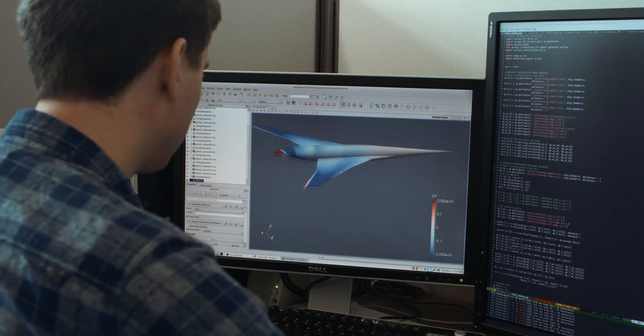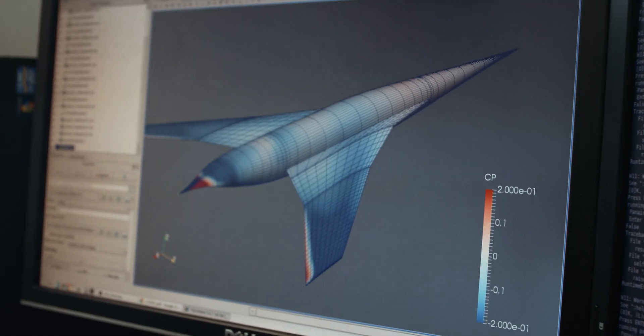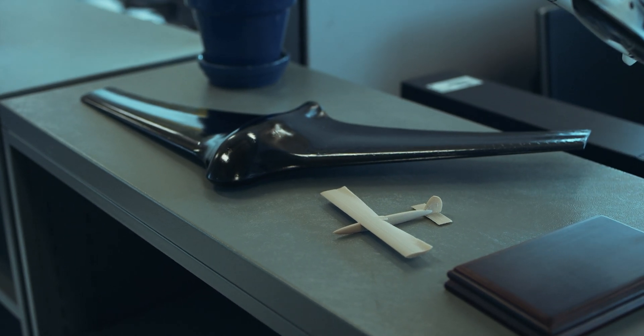In the supersonic regime we're looking at small changes in the geometry because those changes make a big impact on the sonic boom that is heard on the ground, so that instead of shattering windows it may sound more like a rumble of thunder as a supersonic aircraft goes overhead.